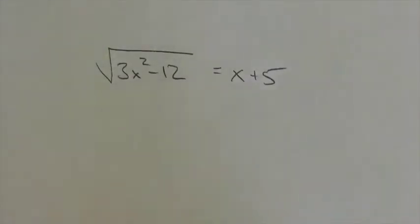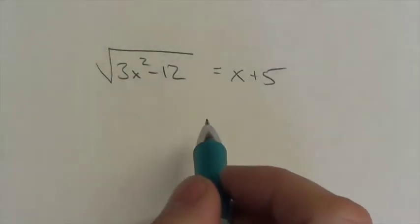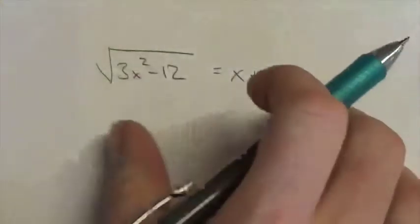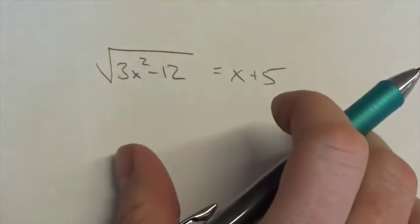Okay everyone, let's take a look at a slightly different version of the equation. Again, we're still looking for restrictions. I want to know what the restrictions are on the variable before I even start to solve this one here.